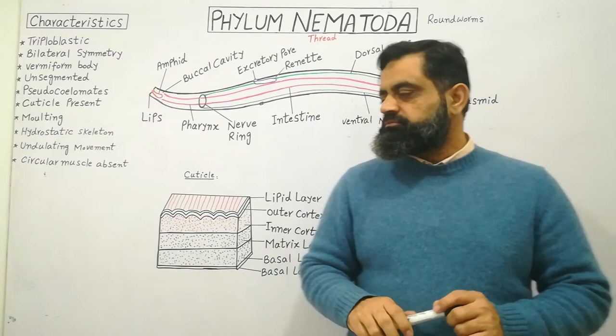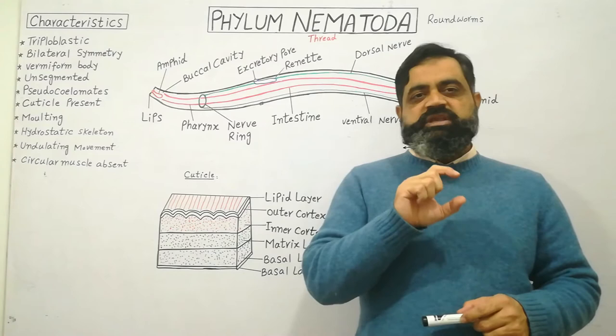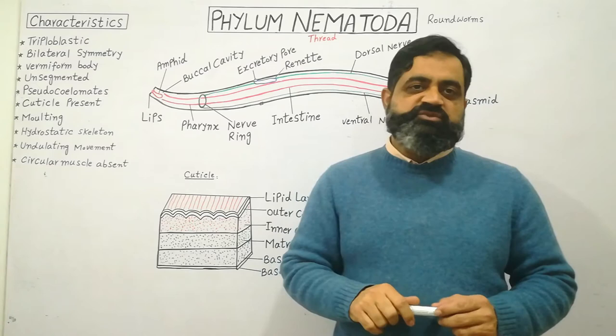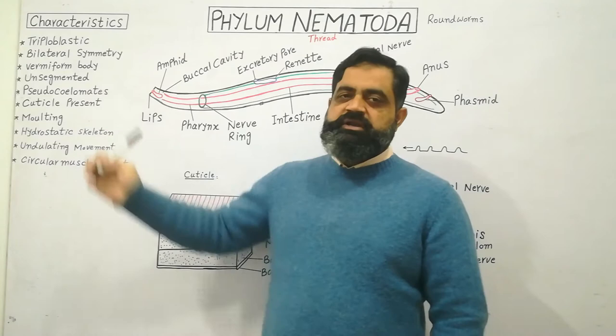These animals are vermiform, meaning their body is long, elongated, cylindrical, and in the form of a worm. These animals are also usually unsegmented — they do not have a segmented body.